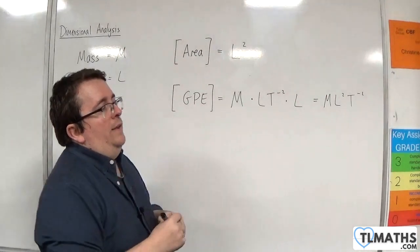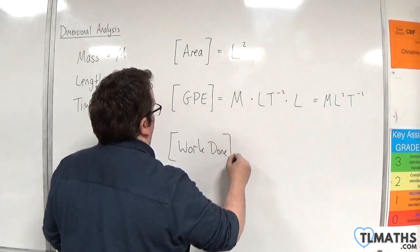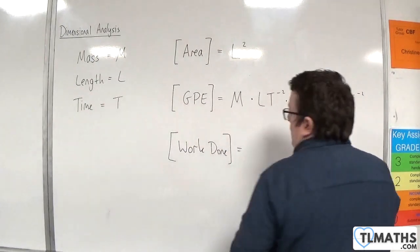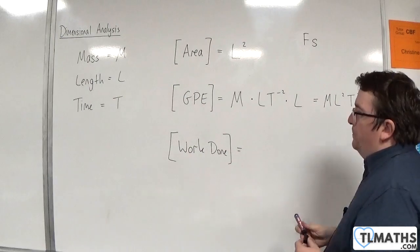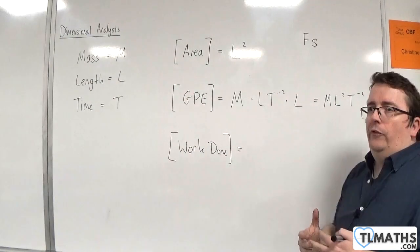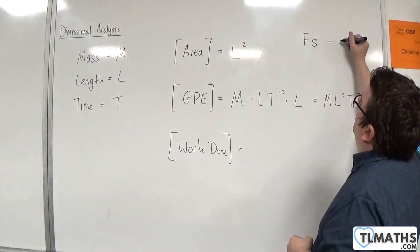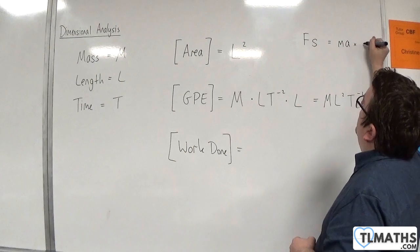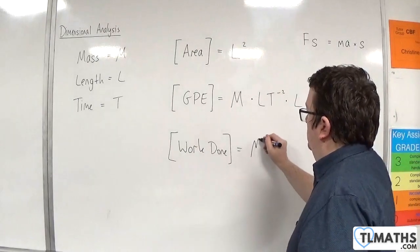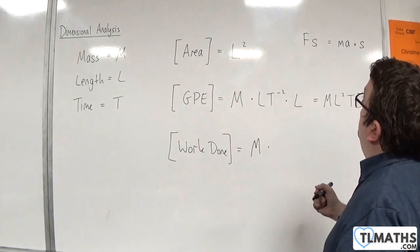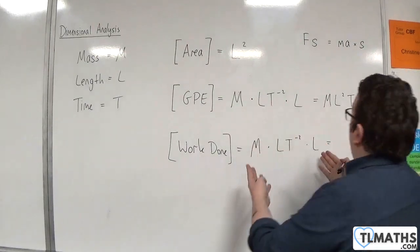What about work done? The dimensions of work done. Work done is a force times by a distance. Now, force is a mass times acceleration, so you could think of this as mass times acceleration times by a distance S. So, mass times by acceleration times by a distance, which is L. And this is precisely what we had before.